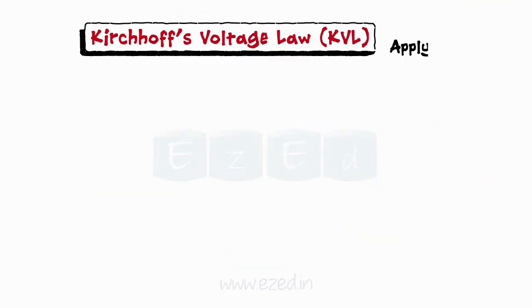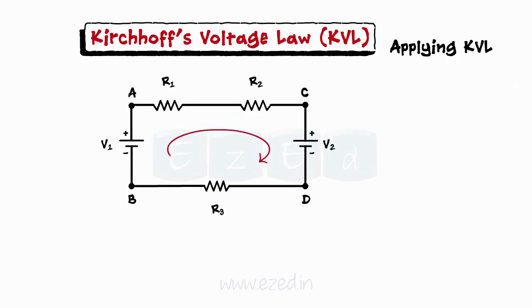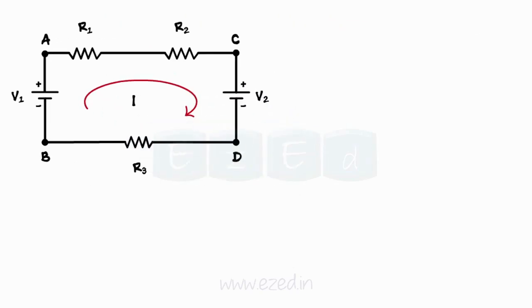Now, let's apply Kirchhoff's voltage law to a simple circuit shown. We have two voltage sources and three resistors in a loop BACDB. So, starting from point B, we get the rise in potential for source V1. Thus, we represent it as plus V1. Now, as we move in the same direction of the current, we observe drop of voltage across resistor R1. So, we represent it as minus I R1. Similarly, drop across resistor R2 is minus I R2.